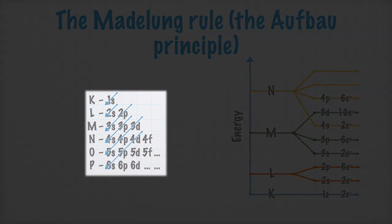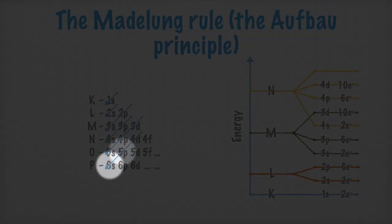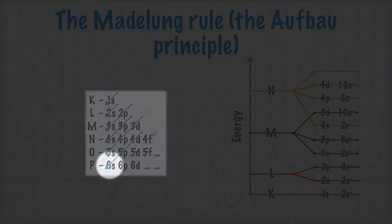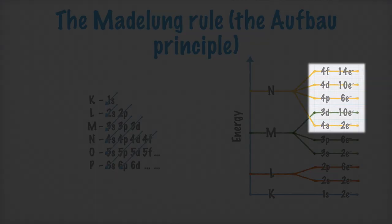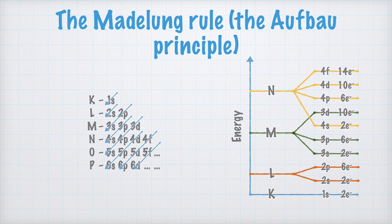Anyway, next to fill up are the 4d orbitals, followed by the 5p and the 6s orbitals, and then we have the 4f, 5d and 6p, and so on. This Aufbau principle holds true for most of the atoms of the periodic table, with some 20 exceptions.